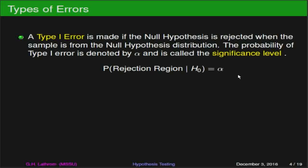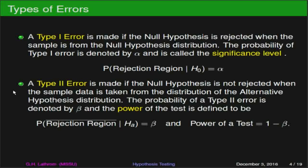The second type of error is called the type 2 error. The type 2 error is made if the null hypothesis is not rejected when the sample data is actually taken from the alternative hypothesis distribution. The probability of a type 2 error we usually denote with beta. Beta is the probability of the complement of the rejection region given that we are operating under the alternative hypothesis. The power of the test — how good the test is — is calculated as 1 minus beta, so it's 1 minus the probability of type 2 error.